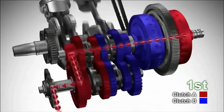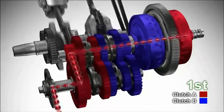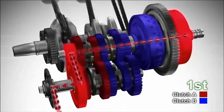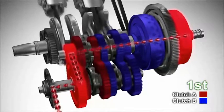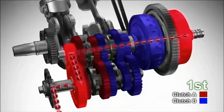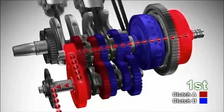Look what happens when moving off in first gear as the DCT uses clutch A for odd numbered gears. At this instant, clutch B for even numbered gears is disengaged and in neutral.